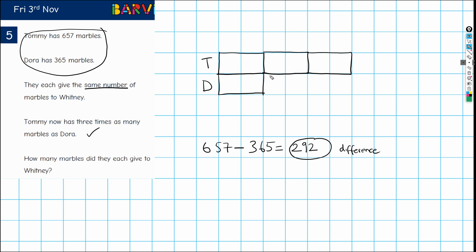So we could draw in a block. Now this block I'm deliberately making a different size from the others, but these two blocks are meant to be the same. And we now know the difference between these, which is 292. So this is Tommy's marbles before we gave some away, so 657, and this is 365.